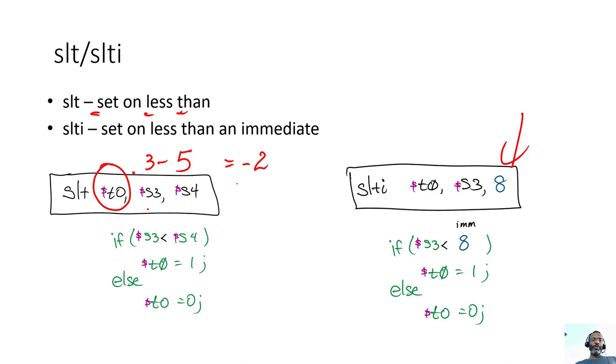And so when this is implemented in hardware, a subtraction is done between two registers, s3 and s4, and then that most significant bit of that number, whatever that number is, that most significant bit is pulled around.